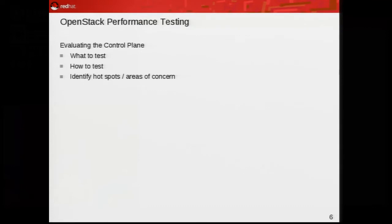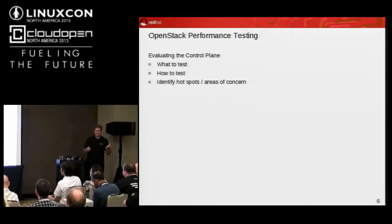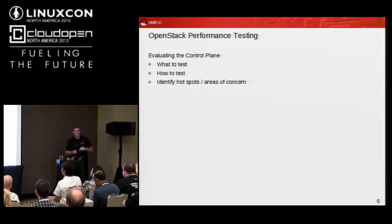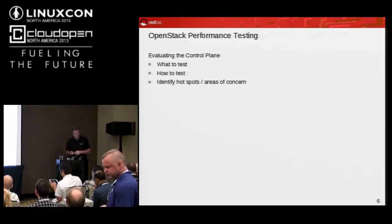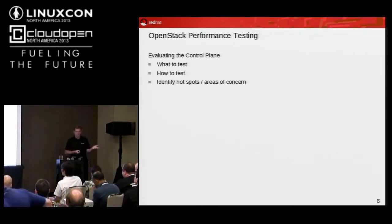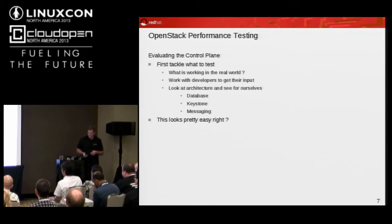When you're trying to evaluate the control plane, what we've been going through at Red Hat is figuring out what to test. We look at the architecture and say the database is going to be a bottleneck, and we'll get into some specifics. Then, how do you test it? Do you test at scale? Do you test smaller? We sit down and try to identify the areas we need to look at.